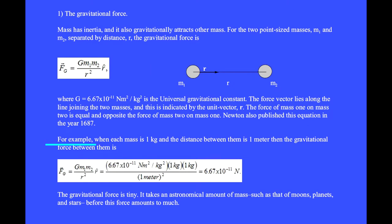For example, when each mass is 1 kilogram and the distance between them is 1 meter, then the gravitational force between them is 6.67 times 10 to the minus 11 newtons. The gravitational force is tiny. It takes an astronomical amount of mass, such as that of moons, planets, and stars, before this force amounts to much.